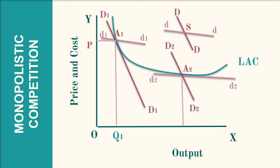Point A2 is the long run stable equilibrium of the group. The ideal output is OQ2 at price Q2A2, earning only normal profits with no excess capacity. The ideal output under perfect competition is OQI, the minimum point of LAC at point L. The output difference Q2QI between perfect competition and monopolistic competition is the cost that consumers willingly pay for product variety. According to Chamberlin, there is therefore no excess capacity under monopolistic competition due to product differentiation.